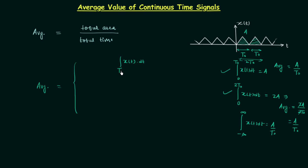So I will write down t0 here, and this shows that the lower limit and the upper limit have a difference equal to t0. This is the area of the periodic signal over one fundamental period, and now we divide this area by the total time to get the average value. The total time is equal to t0, so we multiply by 1 over t0. This is the formula for the average value of a continuous time signal when the signal is periodic.